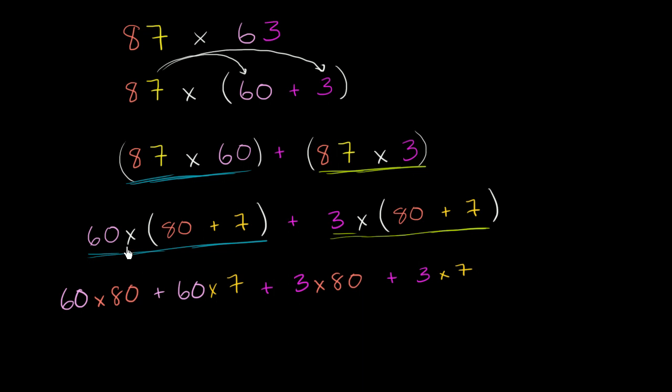So notice, what we really did is we thought about what each of these digits represent. 8 represents 80, 7 represents 7, 6 represents 60 because it's in the tens place. This 3 is in the ones place, so it's just 3. And we just multiplied them all together. We multiplied the 80 times the 60, the 80 times the 3, the 7 times the 60, the 7 times the 3. And then we add them all up together.